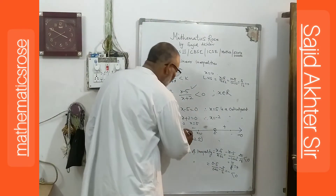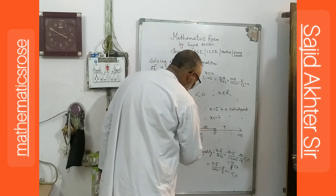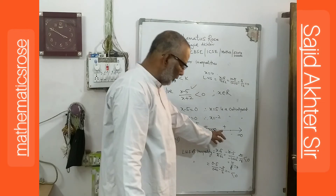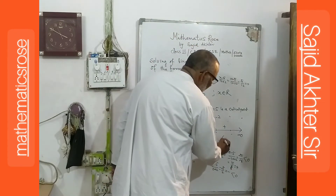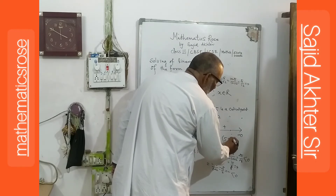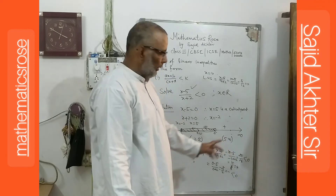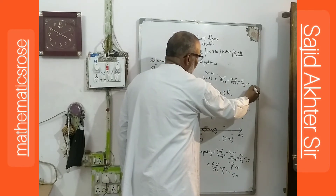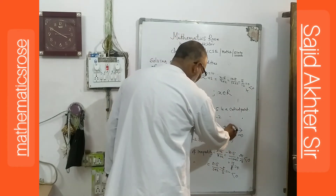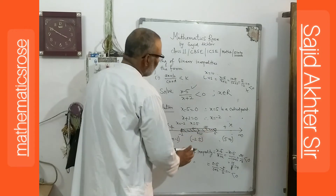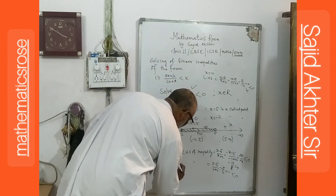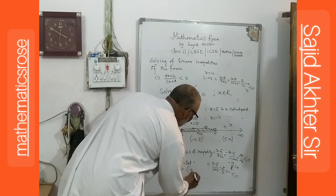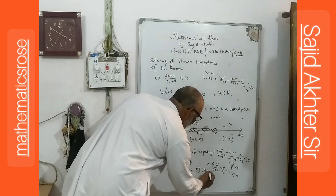The interval 5 to infinity gives a positive value, which is greater than 0, so it is not less than 0 and is not a solution. Therefore, the solution set is the open interval minus 2 to 5, written as minus 2 is less than x is less than 5, where x belongs to the real numbers.